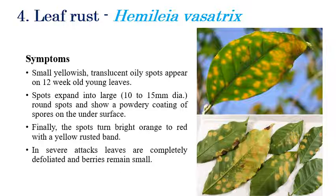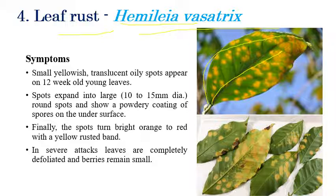For management of damping off and collar rot, soil drenching with copper oxychloride is very efficient. Next is leaf rust, caused by Hemileia vastatrix — a very important disease. This disease was very severe in the 1860s in Sri Lanka, and it spread from Sri Lanka to India around 1869 to 1870.